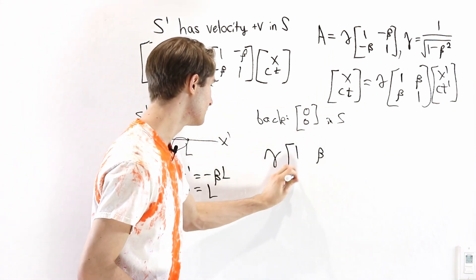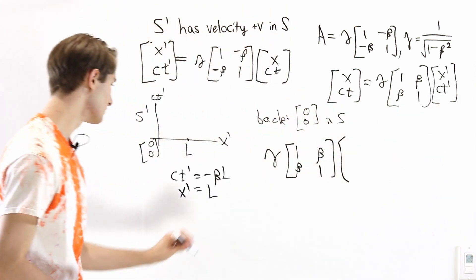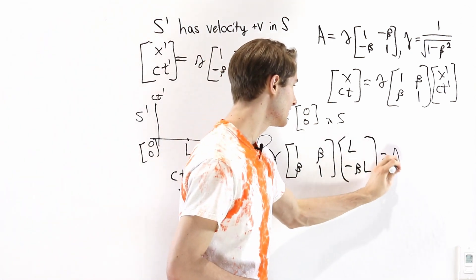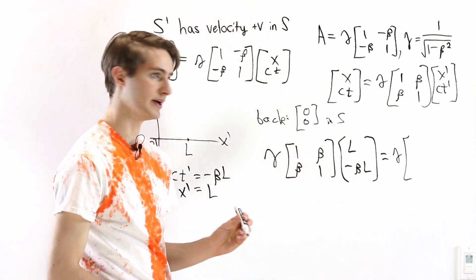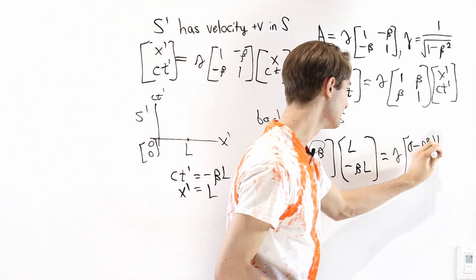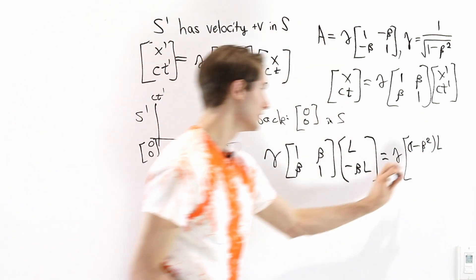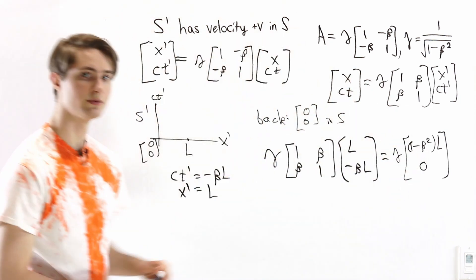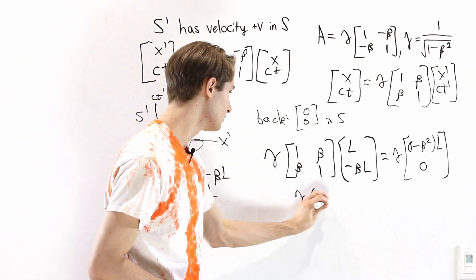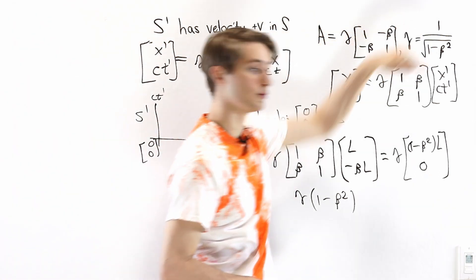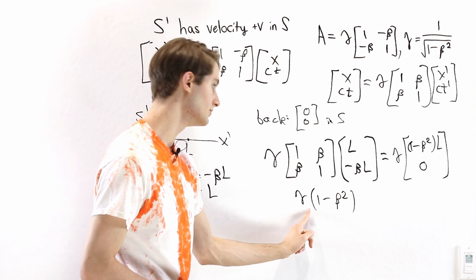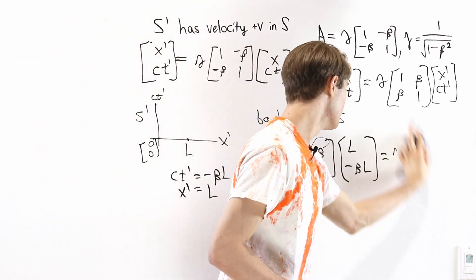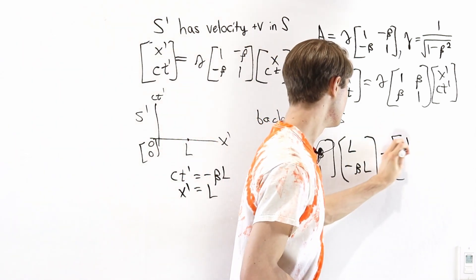Now we want to transform back into the coordinates of S. Gamma times 1, beta, beta, 1 multiplied by our primed coordinates — that's L and negative beta L. What do we get? Multiplying this matrix, we get gamma out front, and then L minus beta squared L, which is 1 minus beta squared times L. And then beta L minus beta L gives zero. This is why I chose CT' equals negative beta L — it's the time that gets us back to zero in reference frame S. Now, gamma times 1 minus beta squared: gamma is 1 over the square root of 1 minus beta squared, so multiplying these gives the square root on top, which is the same as 1 over gamma.